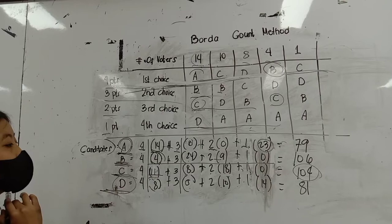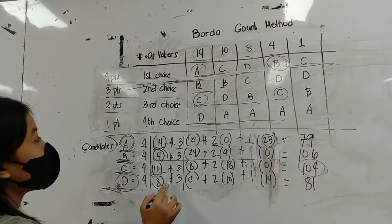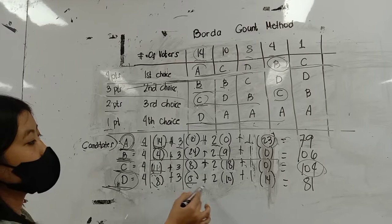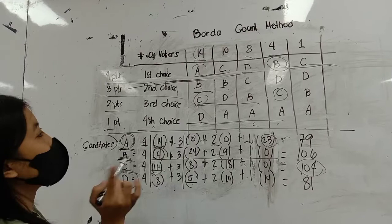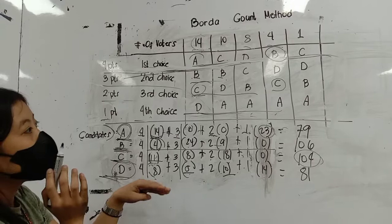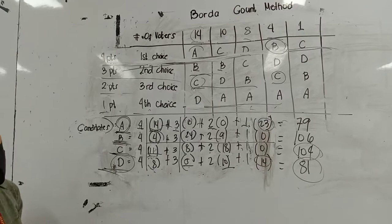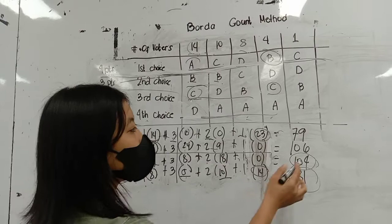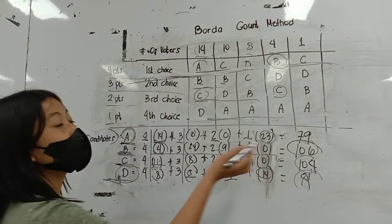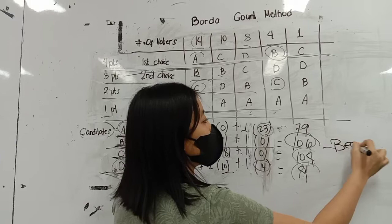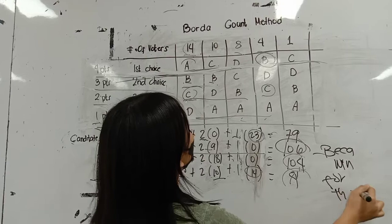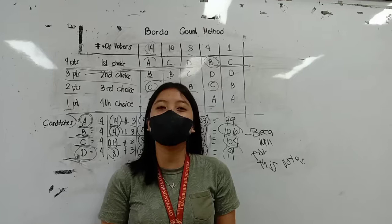For the last candidate D: at four points, 1 vote equals 8; at three points, 2 votes, coming to 5; at two points, 1 vote equals 10; at one point, 1 vote equals 14. Total for D is 81. Comparing all totals — A: 79, B: 106, C: 104, D: 81 — candidate B, Becca, wins with 106 votes, the highest total. That concludes today's video. I hope you learned something about the Borda Count Method. Thank you.